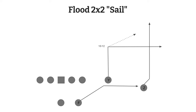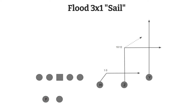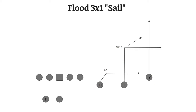The next concept is flood, seen out of either a two or three wide receiver look. When you have two wide receivers, the halfback makes up the third route. You'll have a vertical, an out route, and a flat route. The idea — especially against zone coverage — is to flood and overrun the zones. If you only have two zones on one side of the field and three wide receivers, one is guaranteed to be open. It's a great call against teams running a lot of zone.